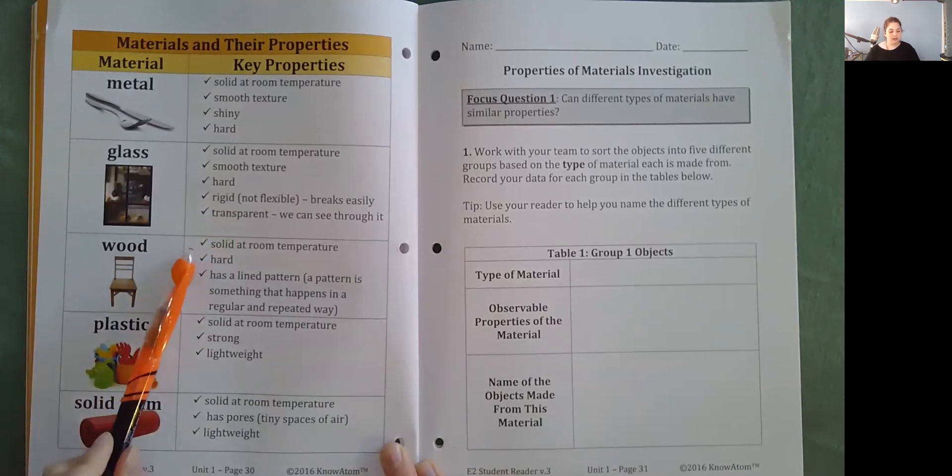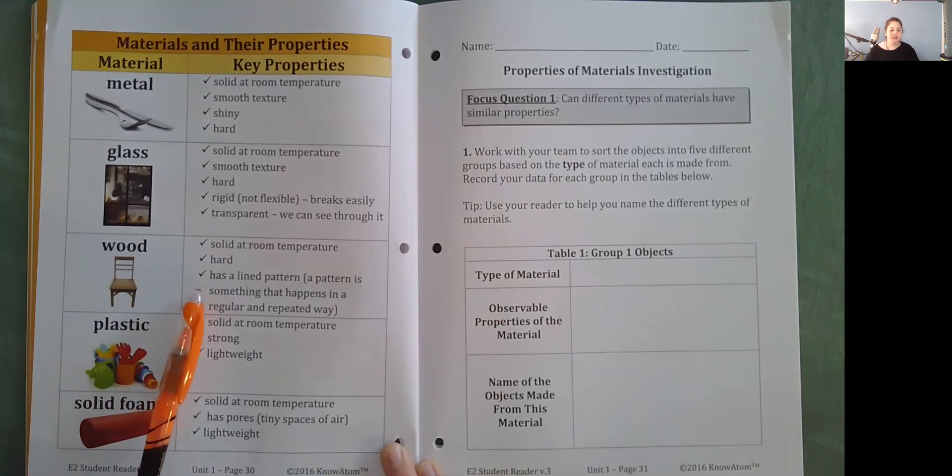Wood. Solid at room temperature. Hard. Has a lined pattern. A pattern is something that happens in a regular and repeated way.